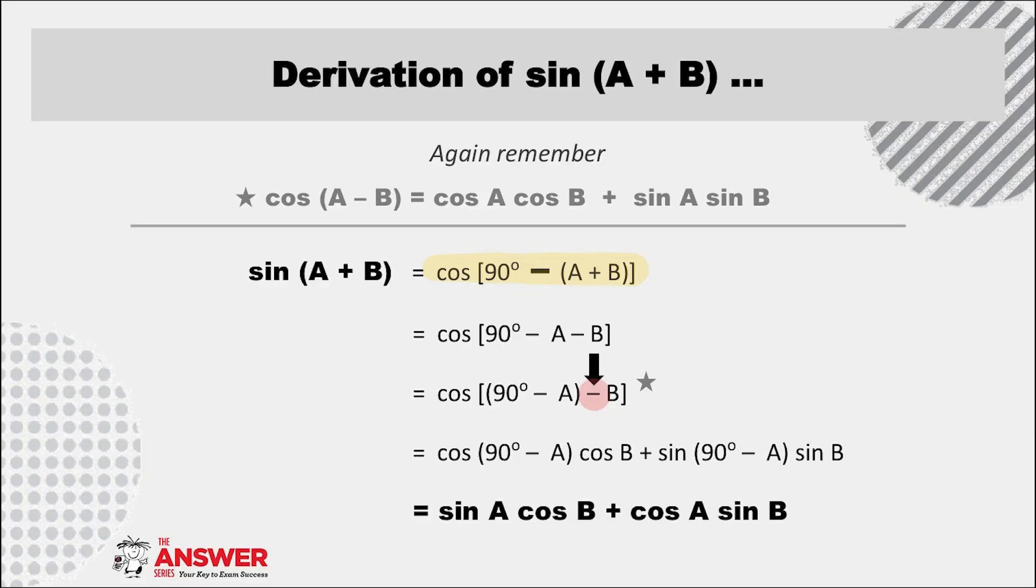Now expand, again using the very first formula we found, which is cos of the difference of two angles. And then by applying co-ratios, we see this results in the formula sin(A + B) = sin A cos B + cos A sin B. The expansion of the compound angle sin(A + B).